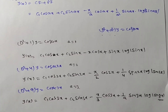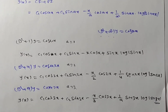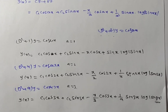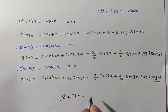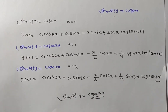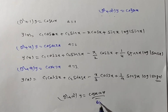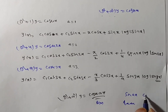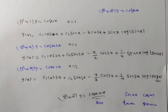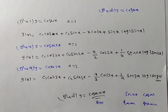This is the procedure to solve differential equations using the method of variation of parameters. The given problem (D² + a²)y = cosec(ax) can also have r(x) replaced by sin(ax), cos(ax), tan(ax), or sec(ax). In the next problems, we will solve those types. Thank you for watching this video.